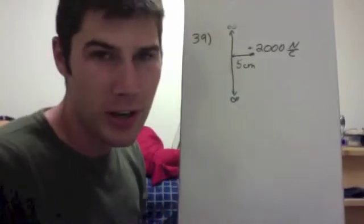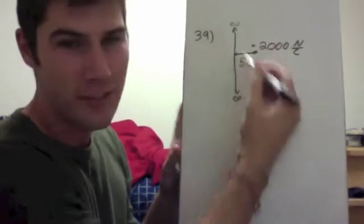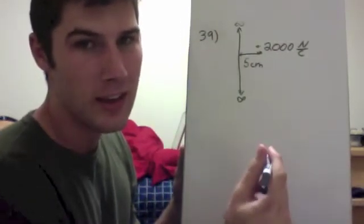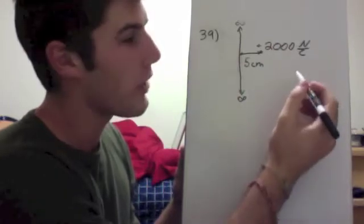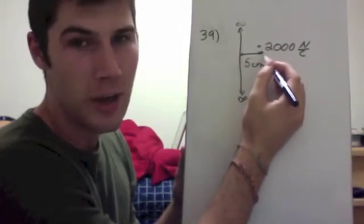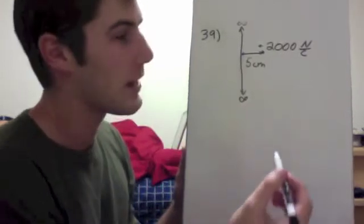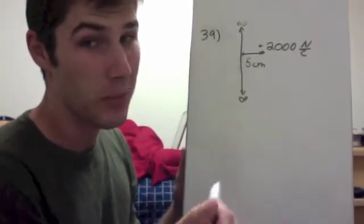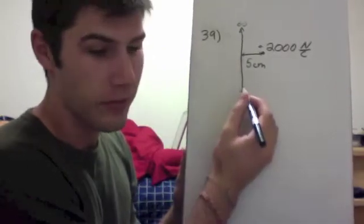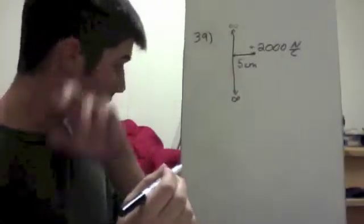We're doing problem number 39. We have an infinite wire that has a 2,000 Newton per Coulomb force towards the wire five centimeters away, and we need to find the charge in nanocoulombs on a one centimeter long slice of the wire.